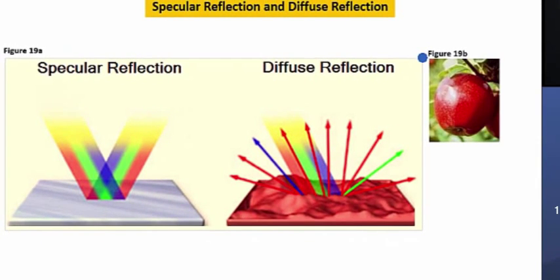For example, looking at figure 19B, when white light hits an apple, primarily red wavelengths are reflected, while much of the other wavelengths of light are absorbed.